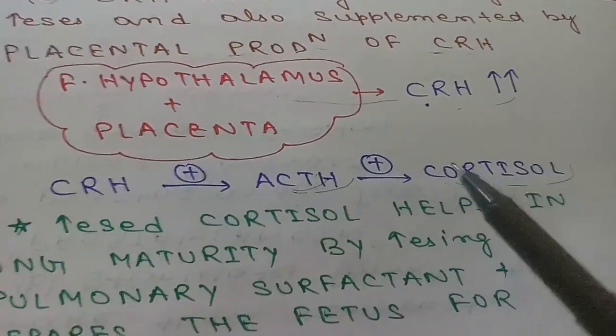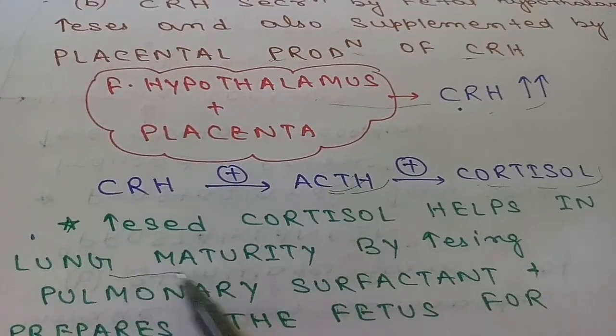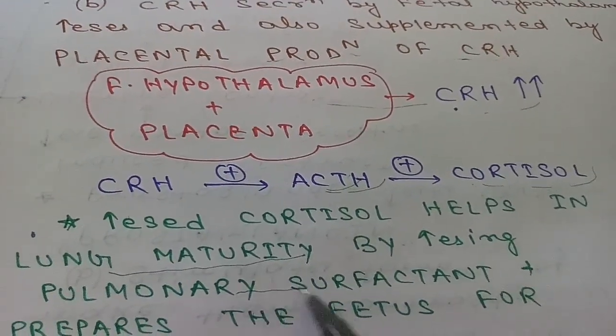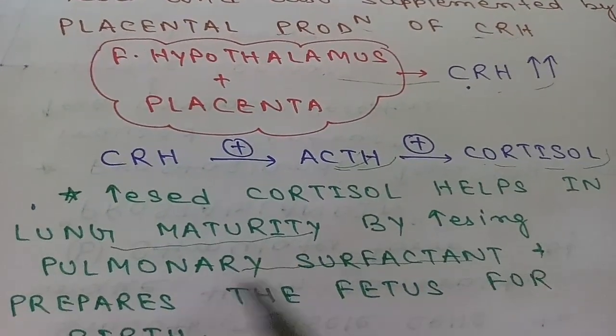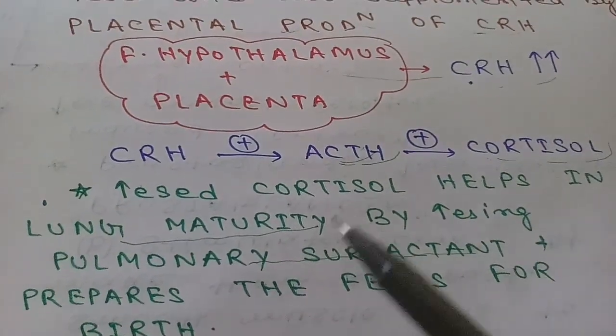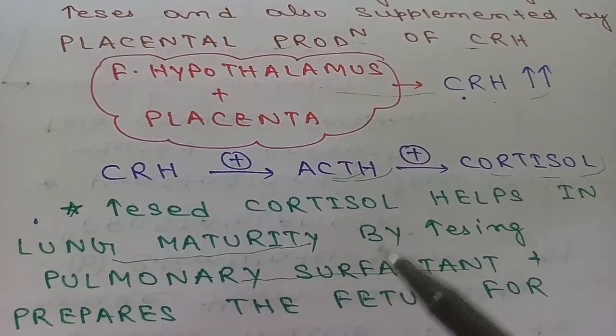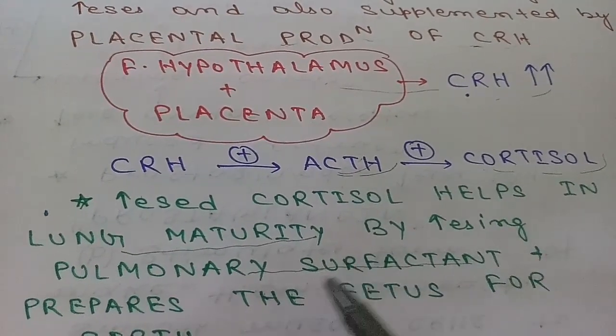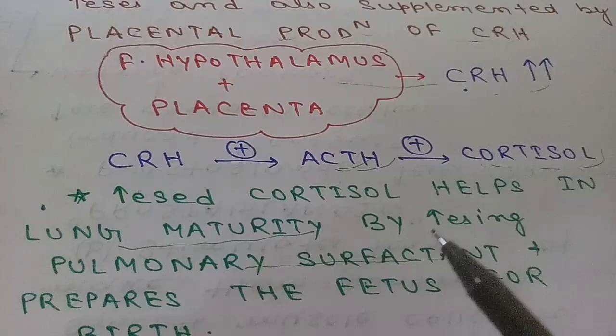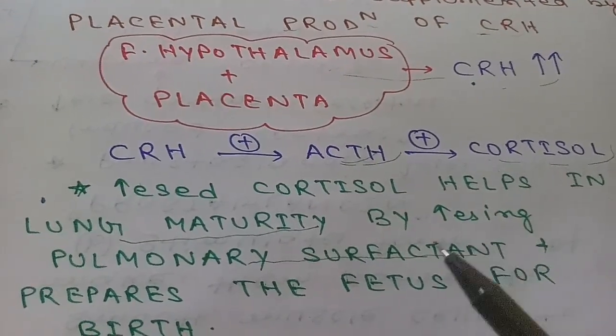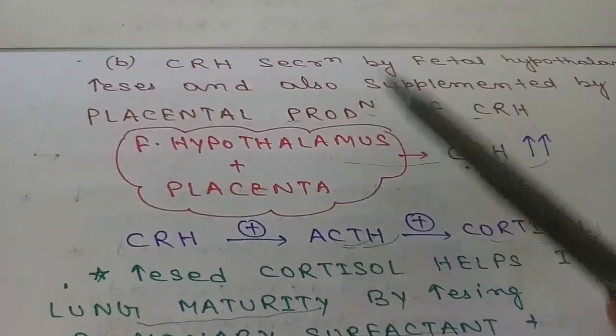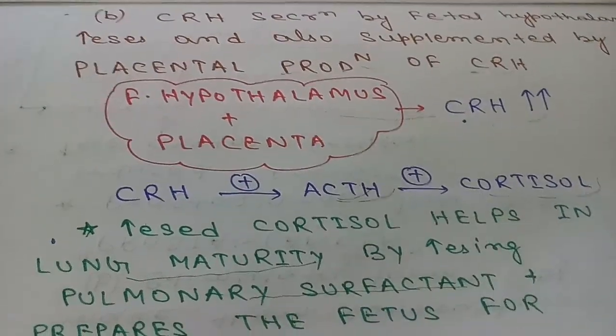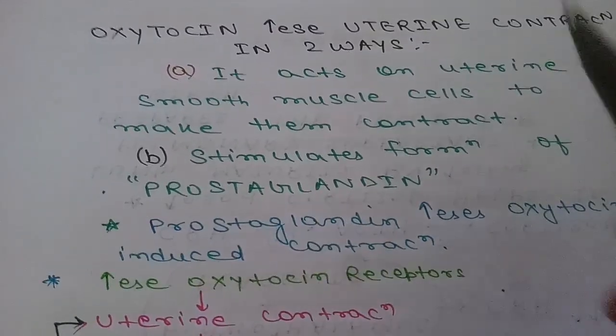This increase in cortisol helps in lung maturity by increasing pulmonary surfactant. This prepares the fetus for birth because after birth the fetus has to breathe using the lungs. Increased level of surfactant is necessary for preventing the collapsing of lungs. These are the two basic principles before parturition.